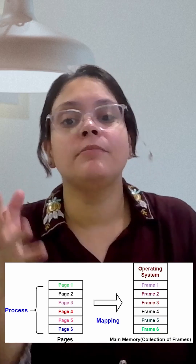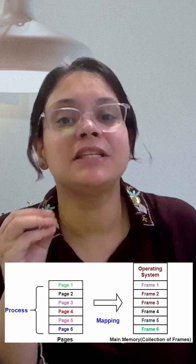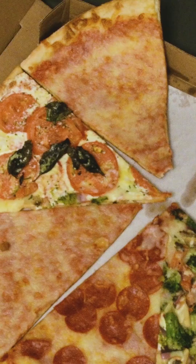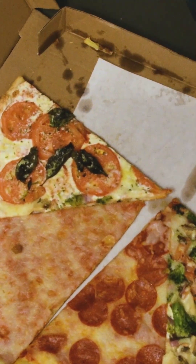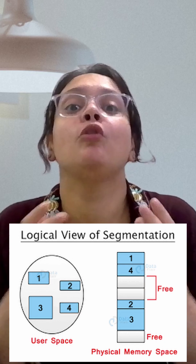Paging vs segmentation — if you are confused, you are not alone. Let me make it simple in 60 seconds. Paging means cutting both your program and memory into equal size blocks called pages and frames. It does not care what the data is; it just fits each piece into fixed slots — think of it like pizza slices, same size but not the same toppings.